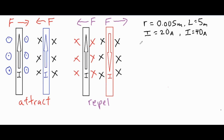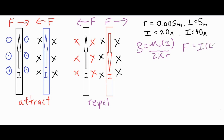Now let's figure out how much force they're experiencing. We're going to use two formulas: the magnetic field formula B = μ₀I / (2πr), and the force formula F = IL × B.